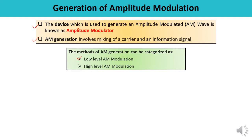The second method is high-level AM modulation. In this system, modulation is done at a high power level. To produce amplitude modulation at high power levels, both the baseband signal and the carrier signal must be at high power levels.